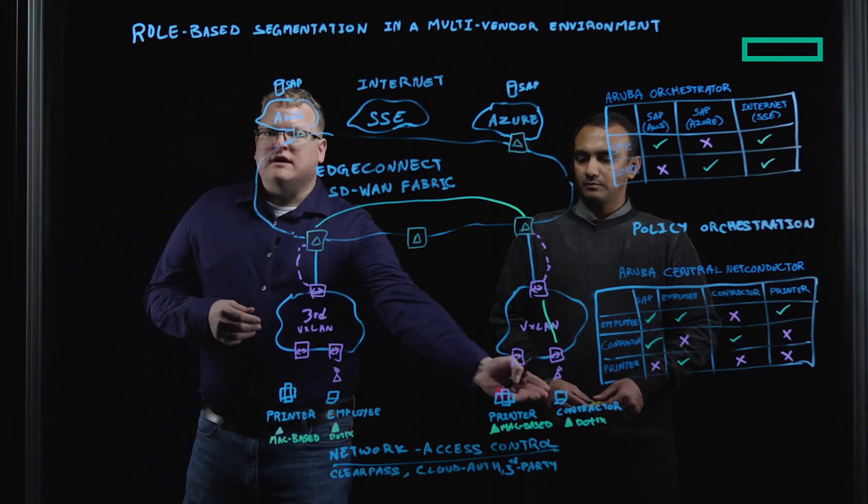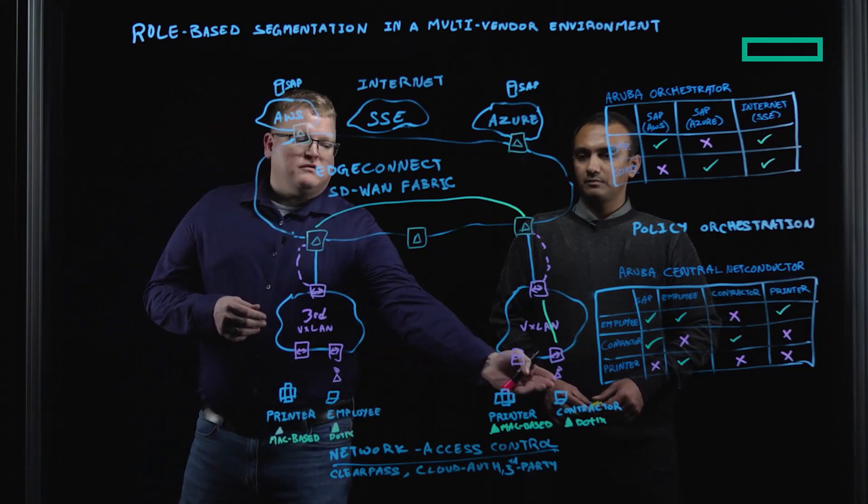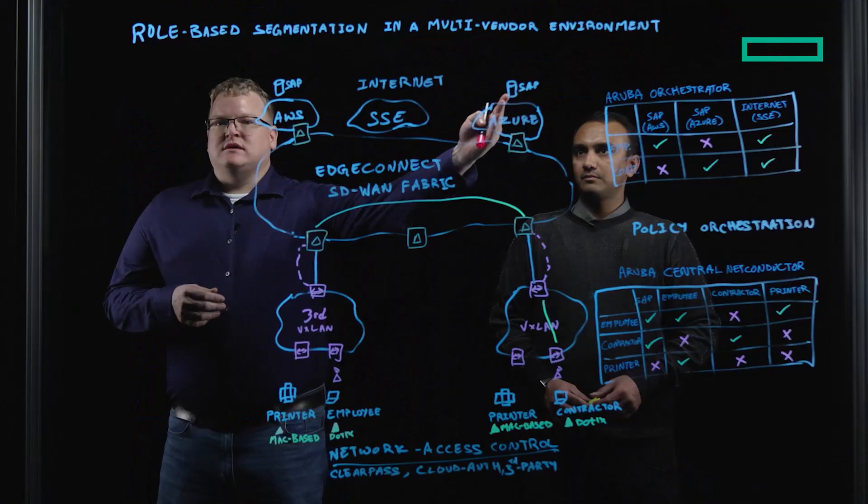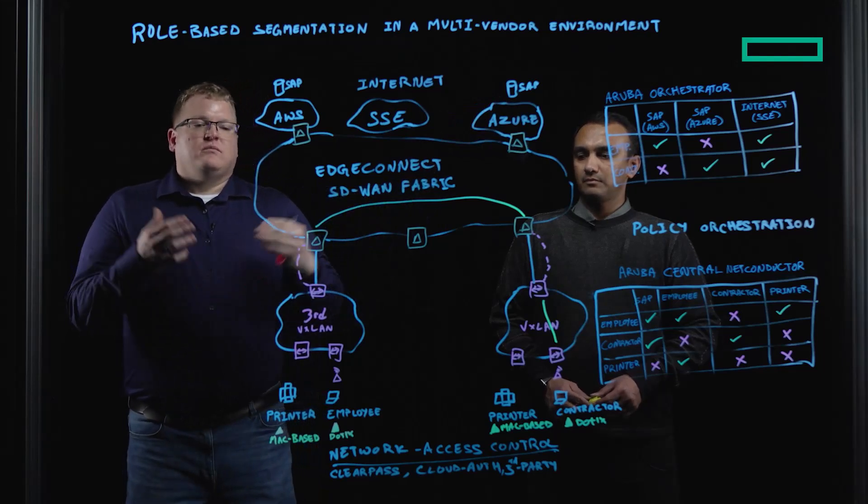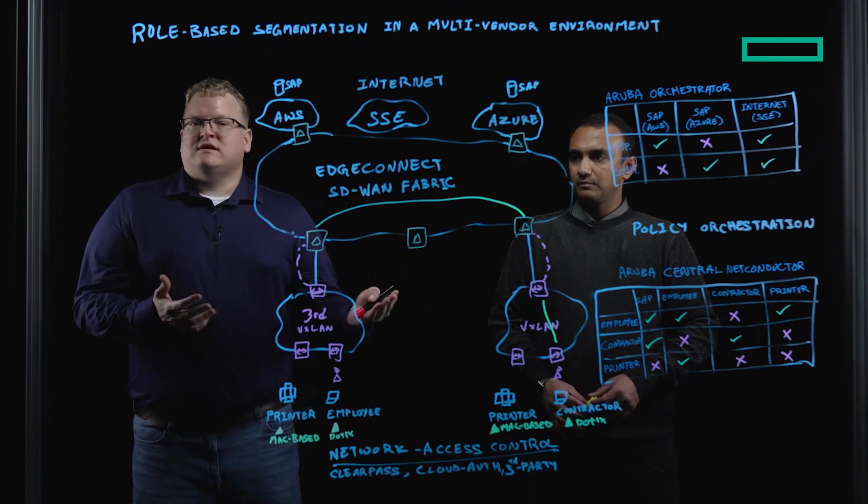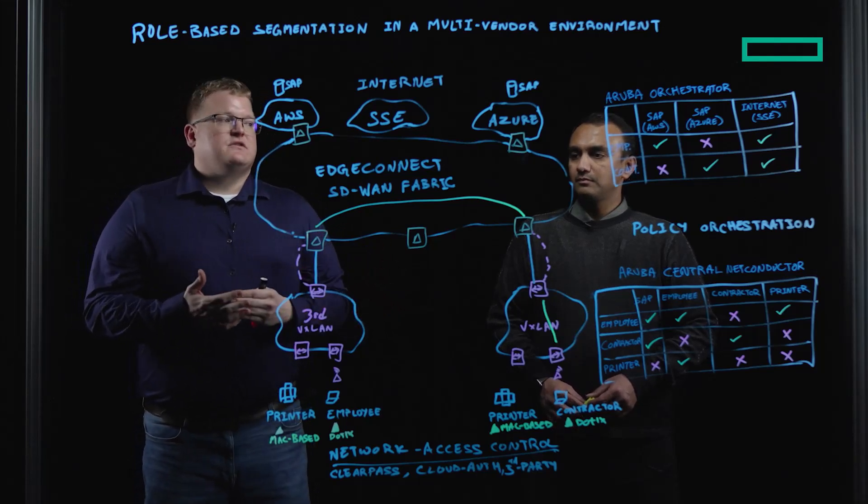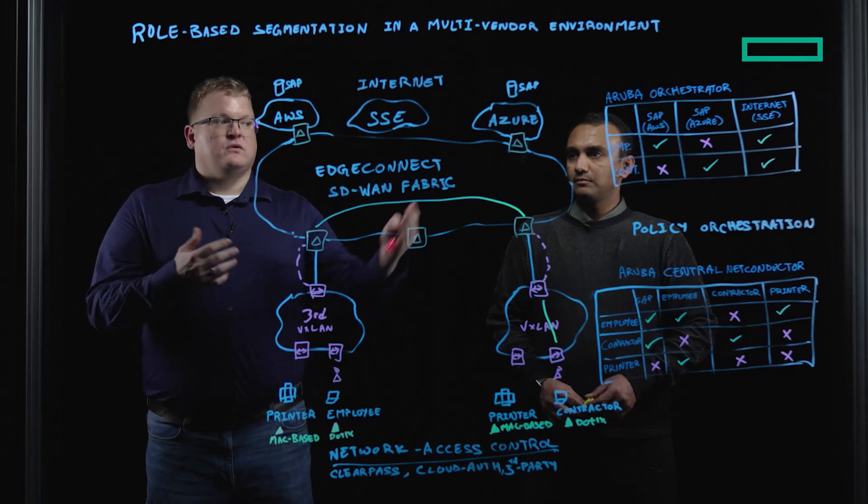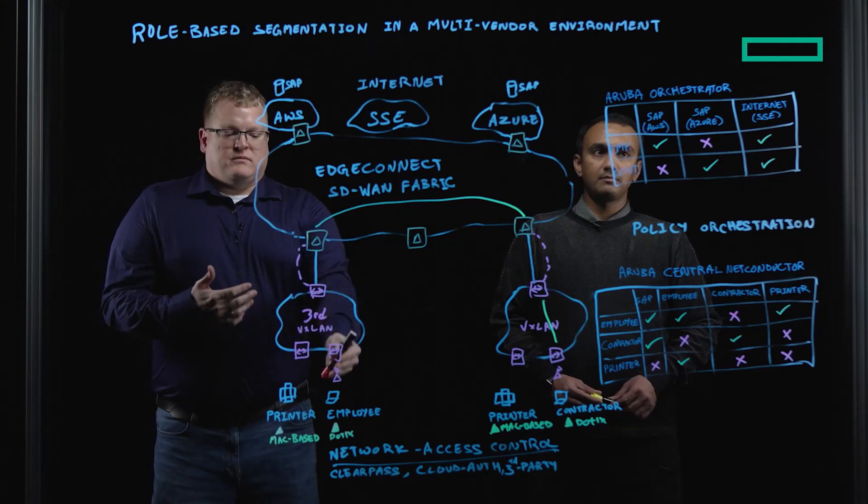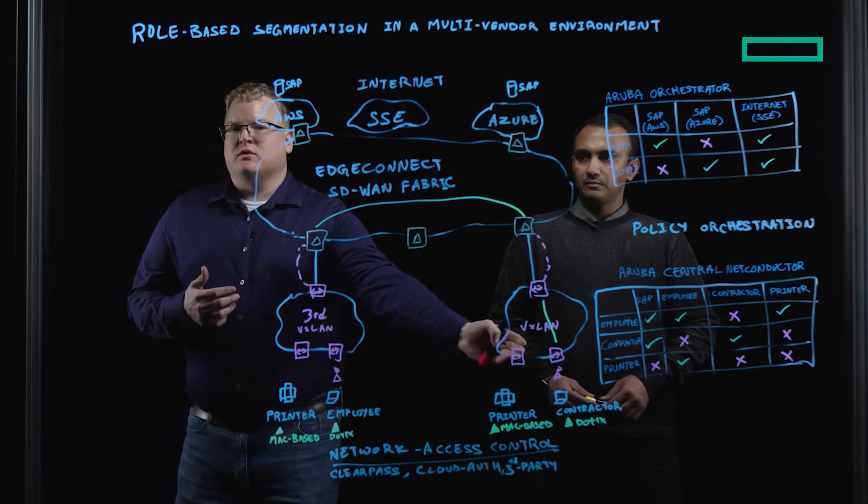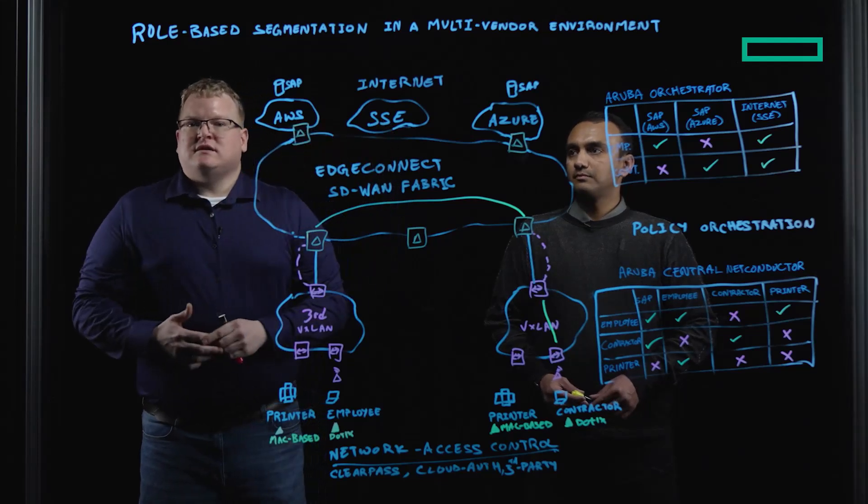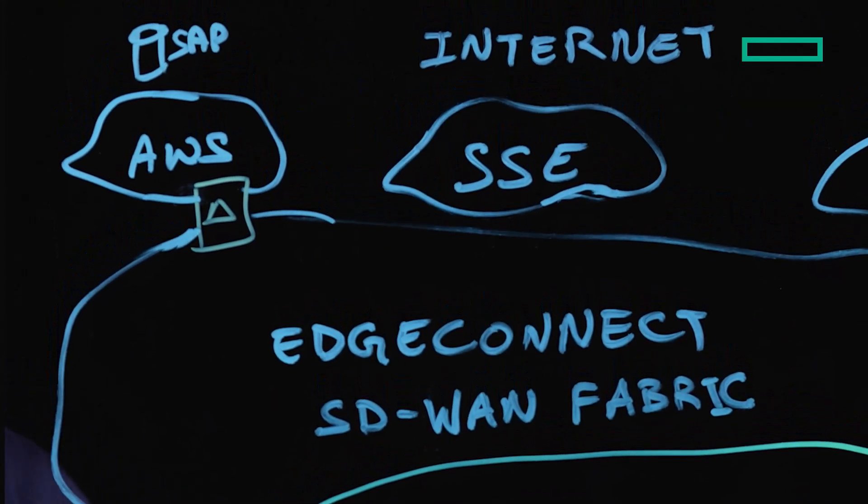Conversely, a contractor is directed from their LAN fabric up to the EdgeConnect SD-WAN and then up to the SAP instance inside of Azure. Because the EdgeConnect SD-WAN fabric receives and understands that role information, it is able to then steer the traffic according to the SD-WAN policy. In this example as well, we have the employee and the contractor role are also able to access the internet via our SSE solution that is attached to the EdgeConnect SD-WAN.